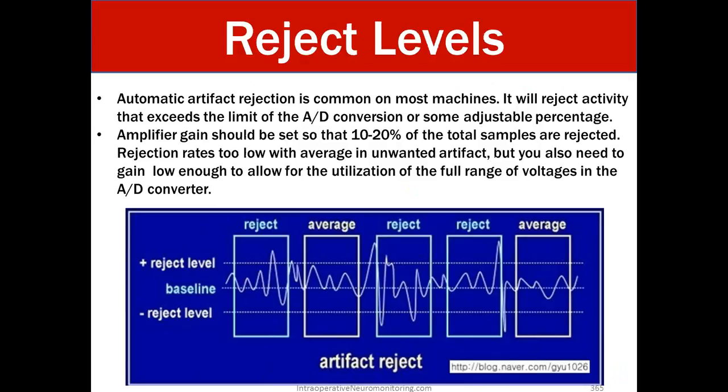Rejection levels. Artifact automatic artifact rejection is common on most machines. It will reject activity that exceeds the limit of the AD conversion and or some adjustable percentage. Amplifier gains should be set so that 10 to 20 percent of the total samples are rejected. Rejection rates too low will average unwanted artifact but you also need to the gain low enough to allow for utilization of the full range of voltage in the AD converter.